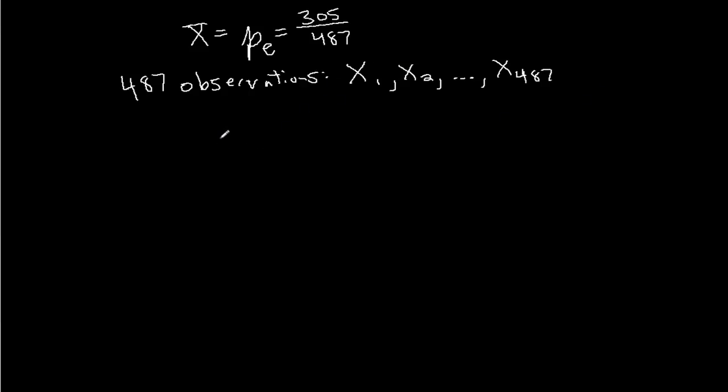If I have 487 observations, that almost surely will qualify for the central limit theorem, so long as those observations are independent. If people aren't discussing their answers with each other, that would violate the independent assumption. But if we are independent and identically distributed, then the sample mean, according to the central limit theorem, is going to have the same mean as the underlying distribution, so that's p.